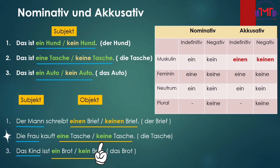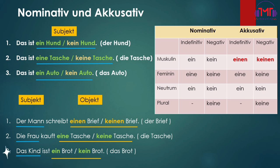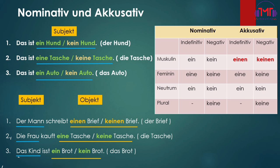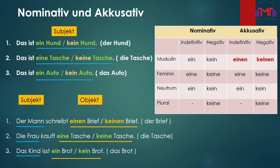Die Frau kauft — now let me tell you what I want to tell you. Das Kind ist ein Brot. Brot is the subject complement. That's what I want to say. Das Brot. Das Kind is Kaleeba — 'ist' is the linking verb. Das Kind ist ein Brot.